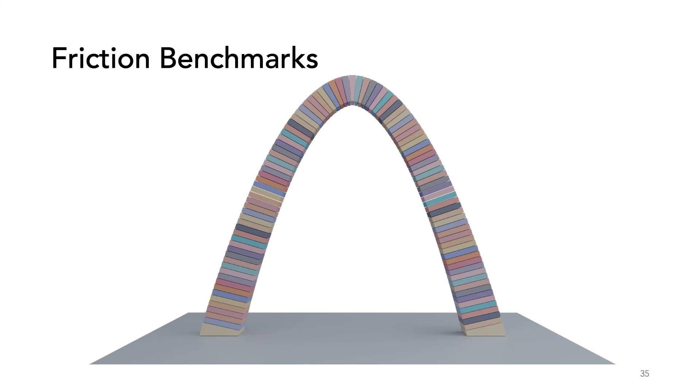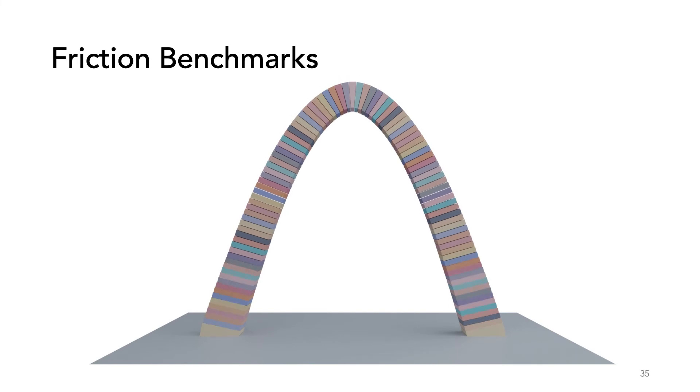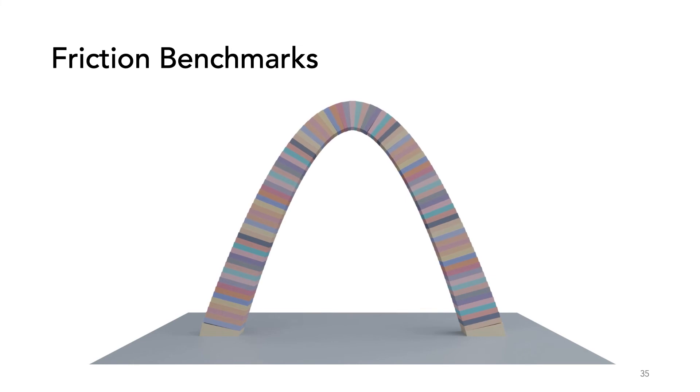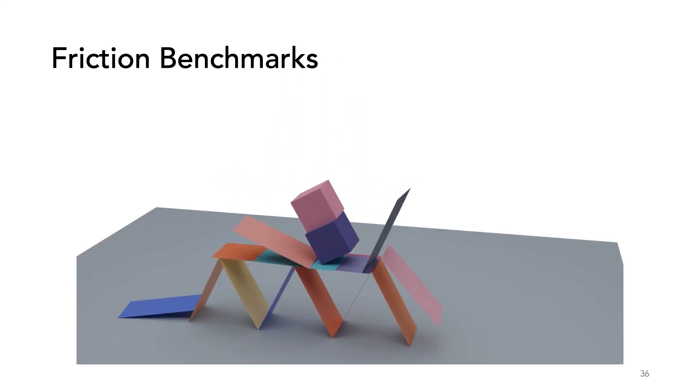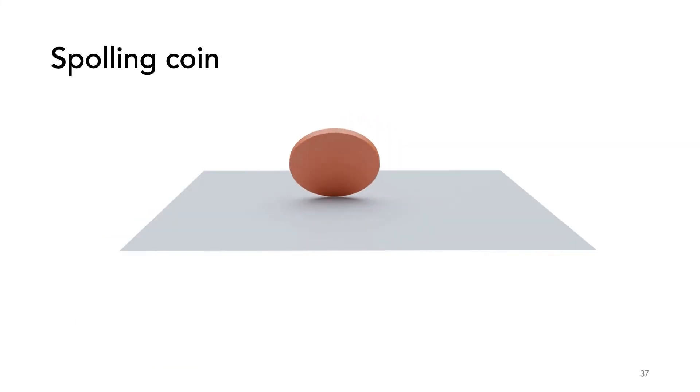We can also simulate the classic friction benchmarks of an arch and a card house. For added difficulty, we use co-dimensional cards where each card is composed of only two triangles. Another great example of friction dynamics is a spooling coin, both spinning and rolling. We nicely capture the expected behavior.